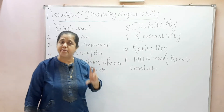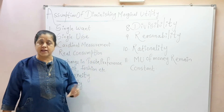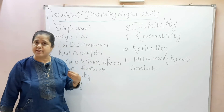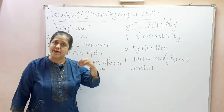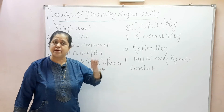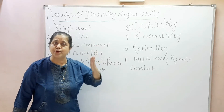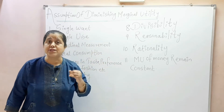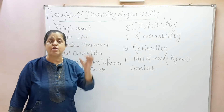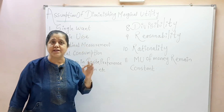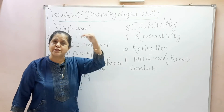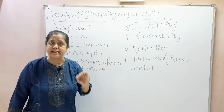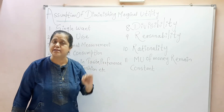Phir hamni ek schedule liya, ek table liya, ek example liya. When we are consuming the first mango, we assumed ten units of satisfaction. Second mango consume kiya, eight units of satisfaction mila. Similarly, hamni each increasing unit ke saath two-two unit ka marginal utility ko diminish kiya. Jab hamni sixth unit consume kiya, to utility was zero, because marginal utility zero means your total utility is maximum, satisfaction is maximum. It is called the point of satiety, your level of maximum satisfaction.